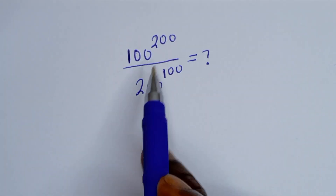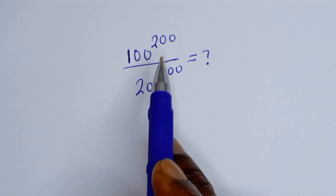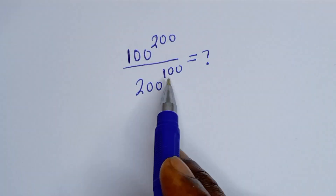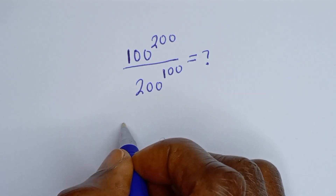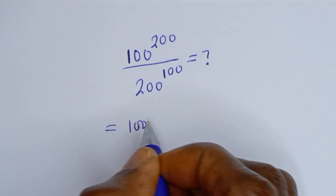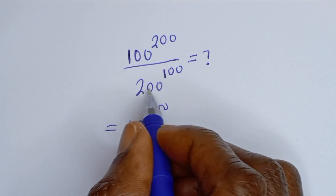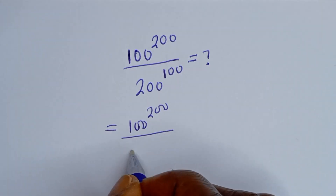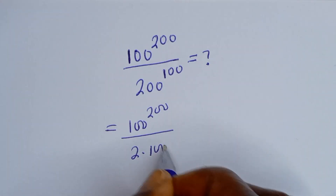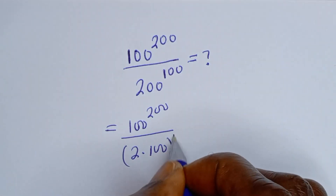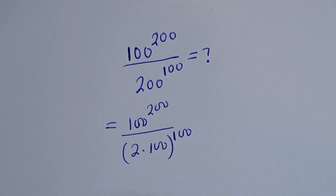Hello! How to simplify this nice math problem: 100 to the power of 200 divided by 200 to the power of 100. This is 100 to the power of 200 divided by 200 to the power of 100, which can be written as 2 multiplied by 100, to the power of 100.